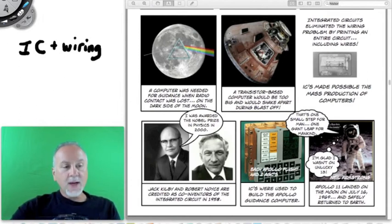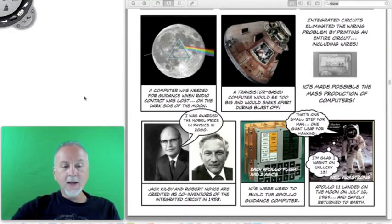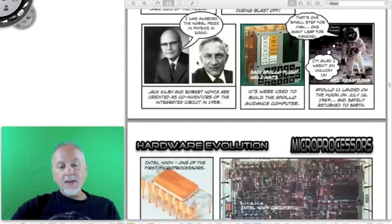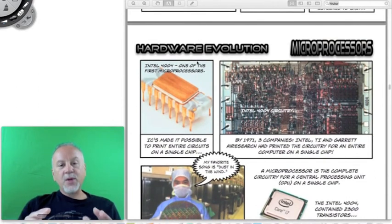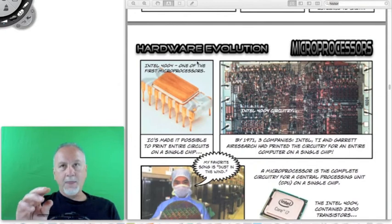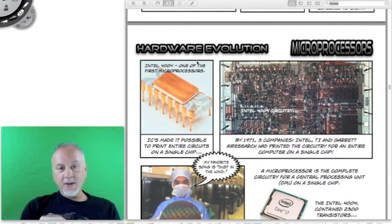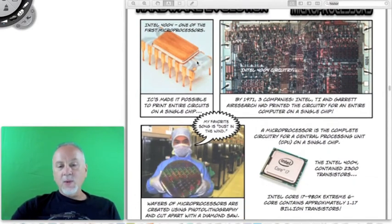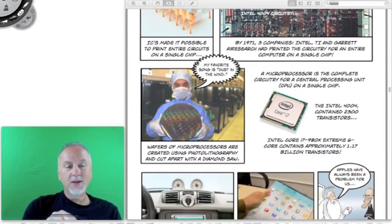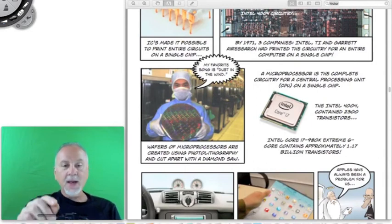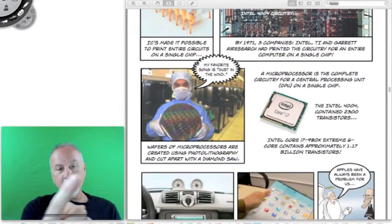So integrated circuits were that next innovation, and the only thing that's really happened since then is the idea that you could put all of the circuitry for a computer on a single chip. So an integrated circuit is the components and the wiring, but a microprocessor is the specific circuitry for a computer. Now we see one down here, this Intel Core i7, six core i7 Intel CPU, that has if you read there 1.17 billion transistors on that chip.